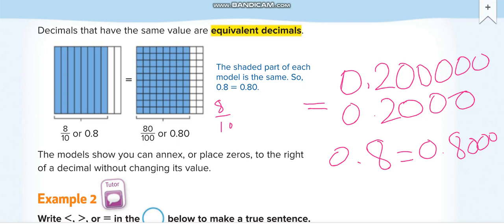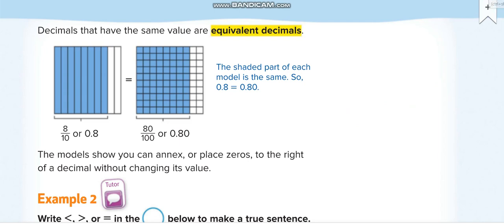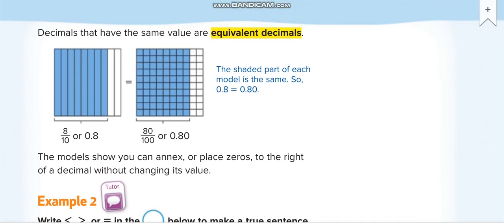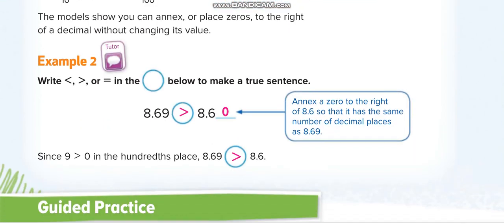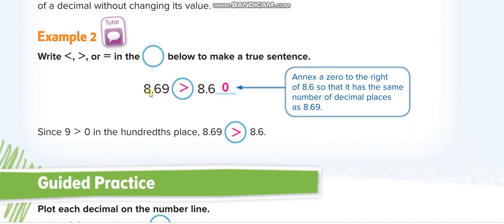Let's move to the next question. Okay, here it is. So write less than, greater than, or equal to and circle below to make a true sentence. For example, 8.69, that is greater than 8.60. Okay. 8.6 or 8.60, equal to 8.60, as I told you above.